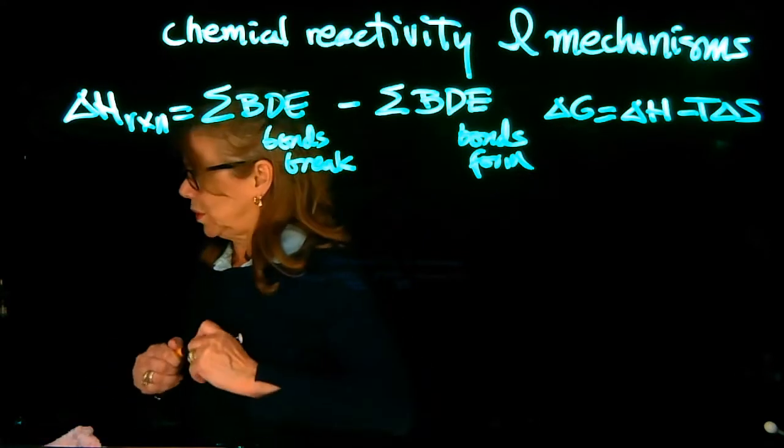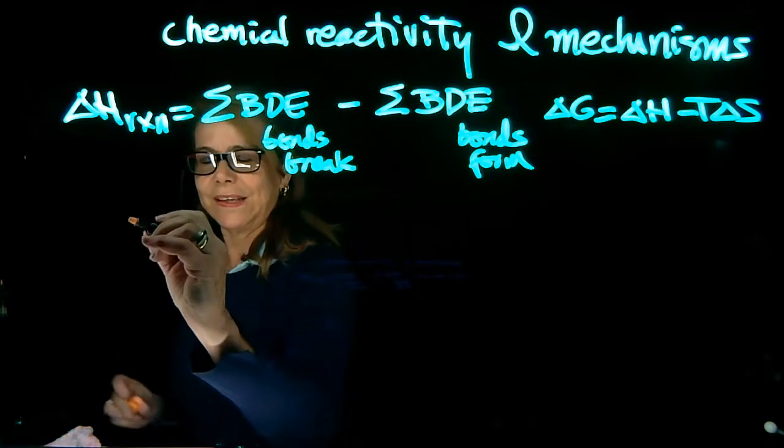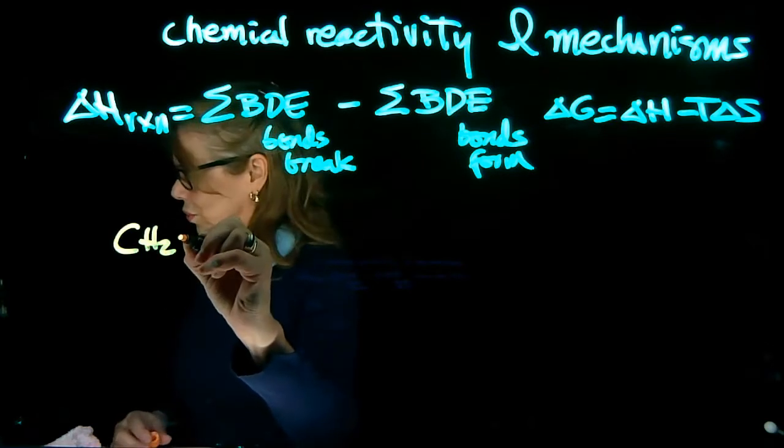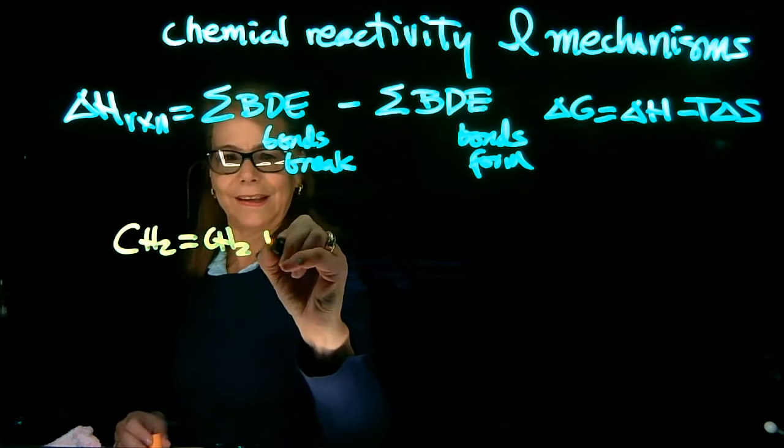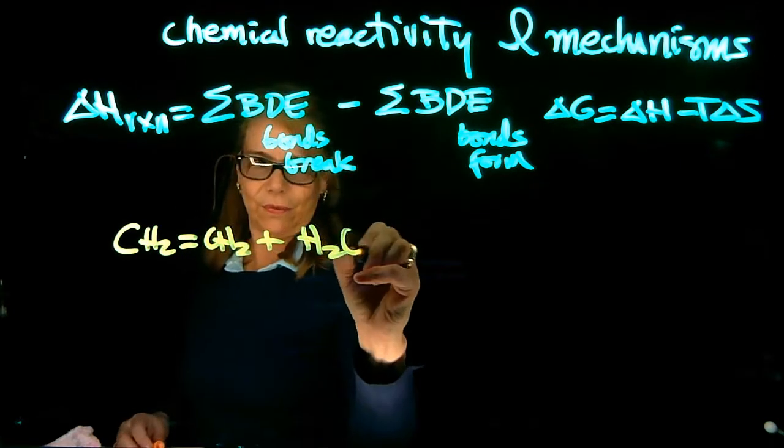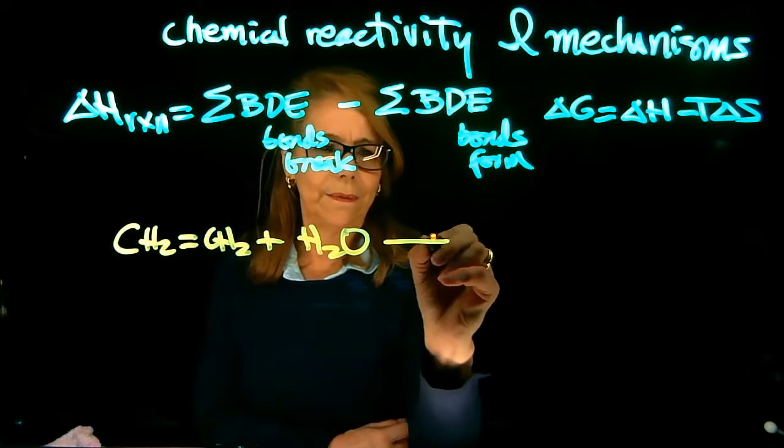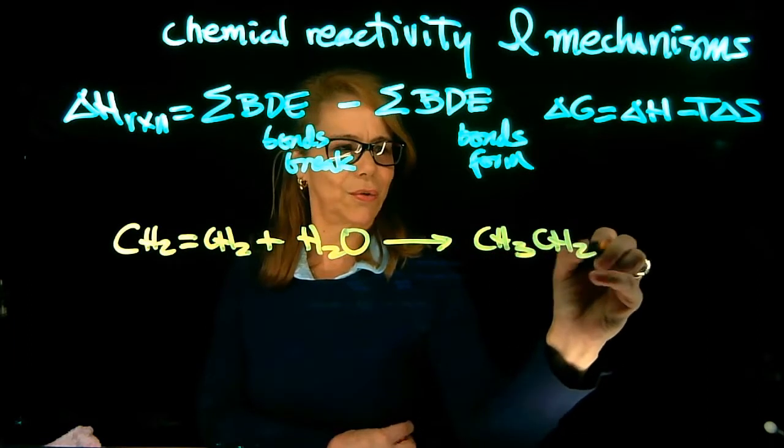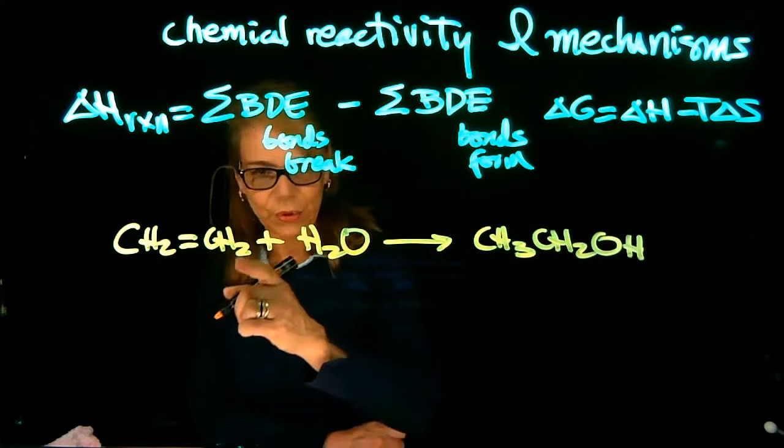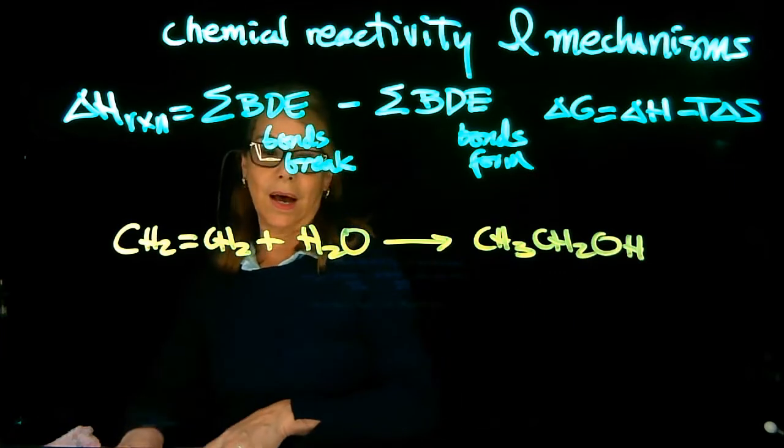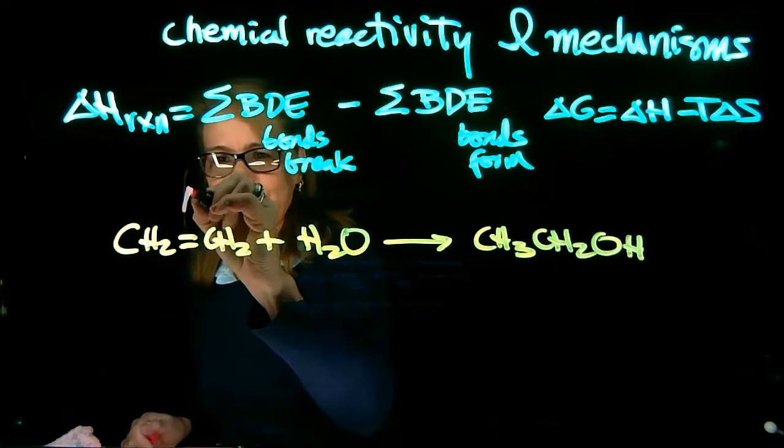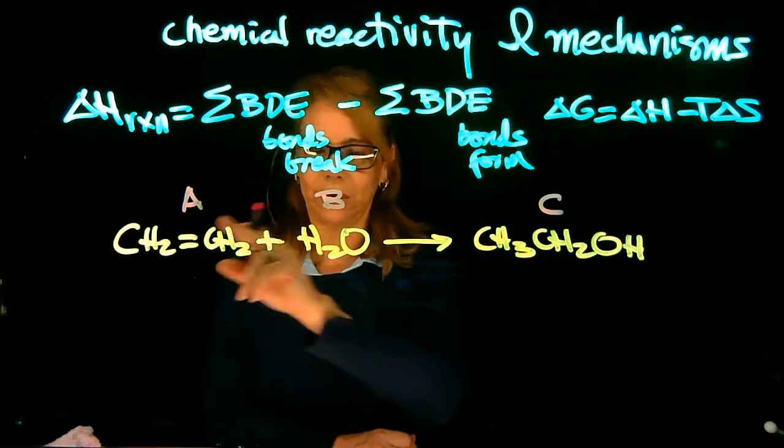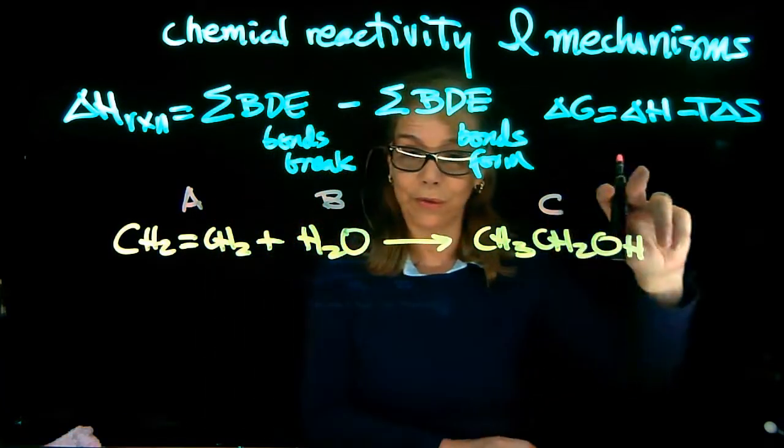Now let's do one more reaction. Here I have CH2=CH2, that's an alkene, then I have water, and now I have CH3-CH2-OH. Notice that I have one molecule here, another molecule here, and we have another molecule, so we're adding two molecules to form one.